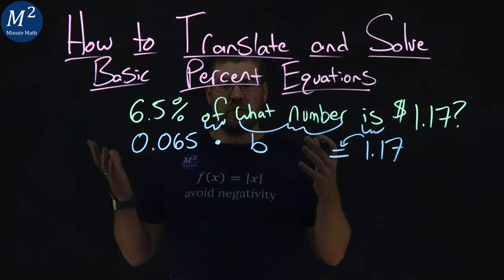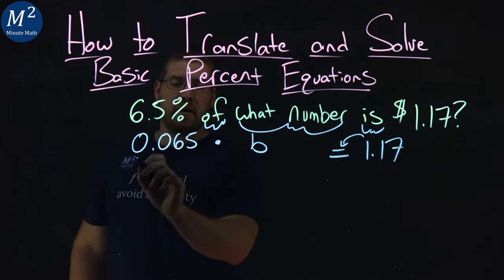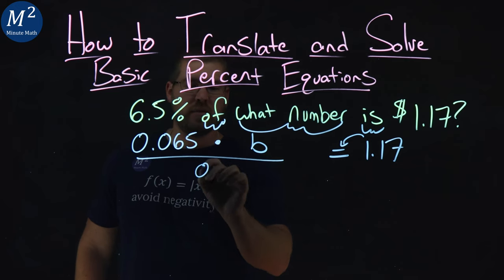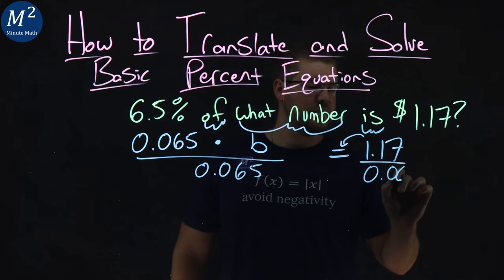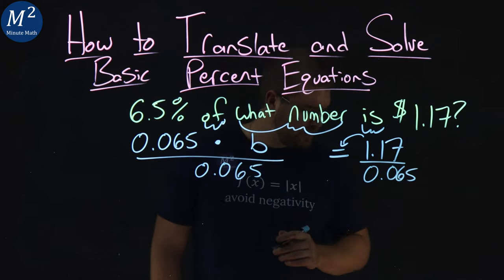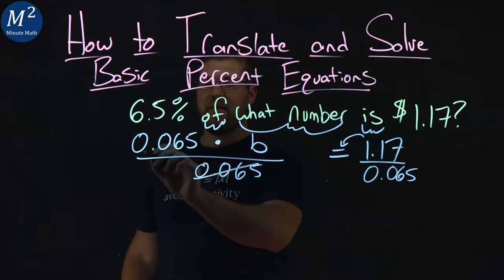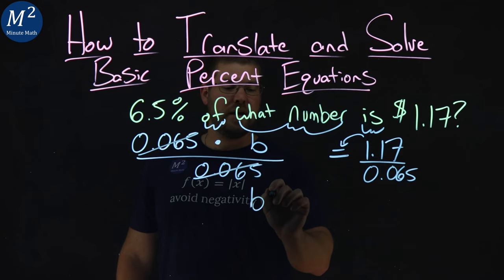From there, we have to solve this. Multiplication is going on here. Opposite is division. 0.065 - we divide that to both sides, 0.065. That cancels out. The decimal is on the left, and B is by itself.